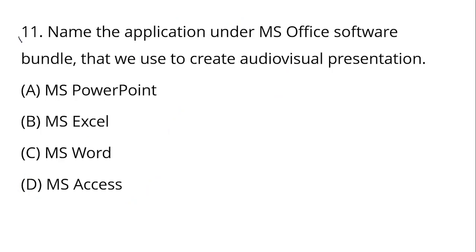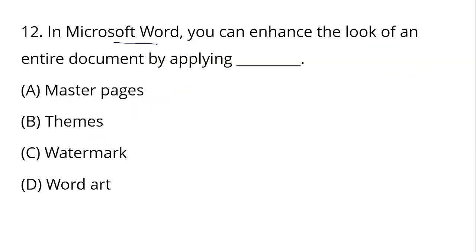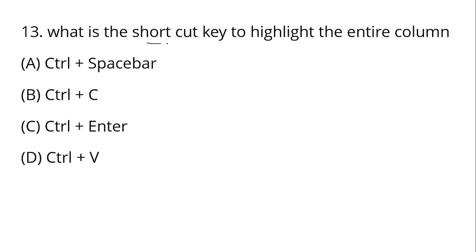Question number 11: Name the application under Microsoft Office software bundle that we use to create audio visual presentation. For presentation, Microsoft PowerPoint is used. Option A - Microsoft PowerPoint is the right answer. Excel is used for calculations spreadsheet, Word for word processing, Access for relational database management. Next, in Microsoft Word you can enhance the look of entire document by applying themes. Option B - themes is your right answer.